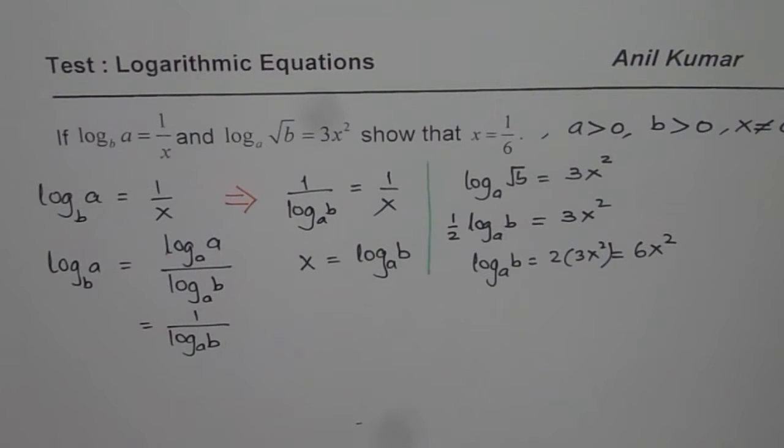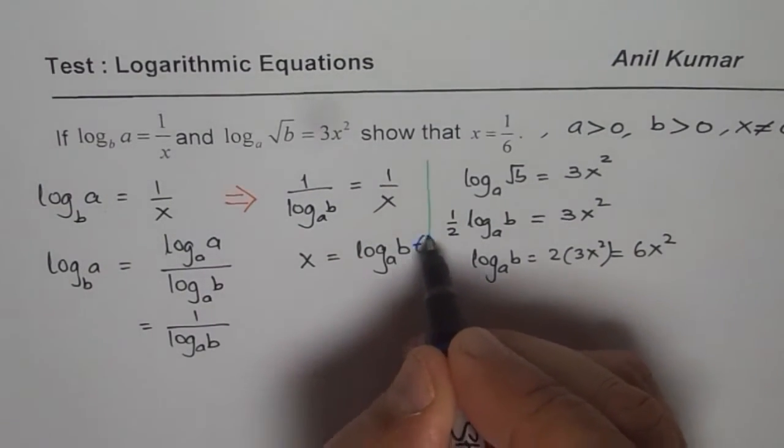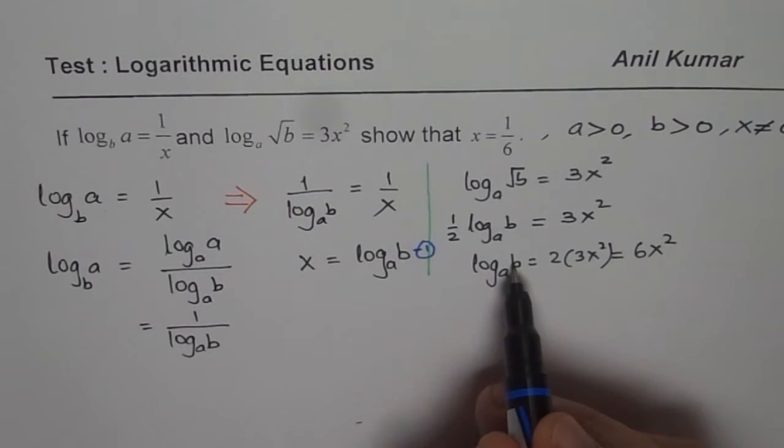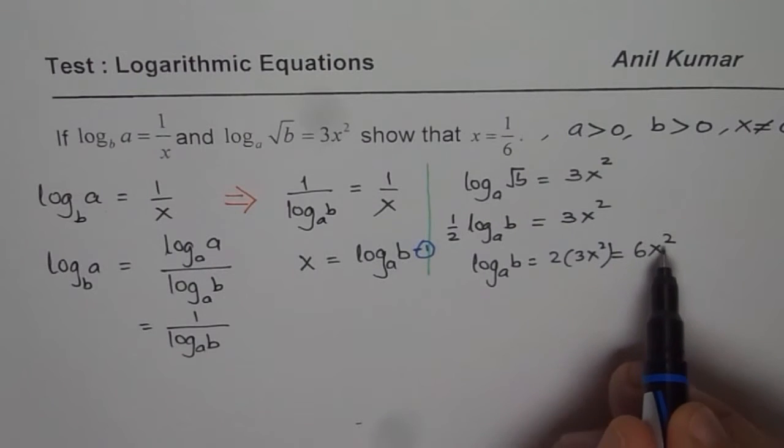Now, what do we have here? On our left side, we have already written that x is basically equals to log a of b. So instead of log a of b, I can write x.